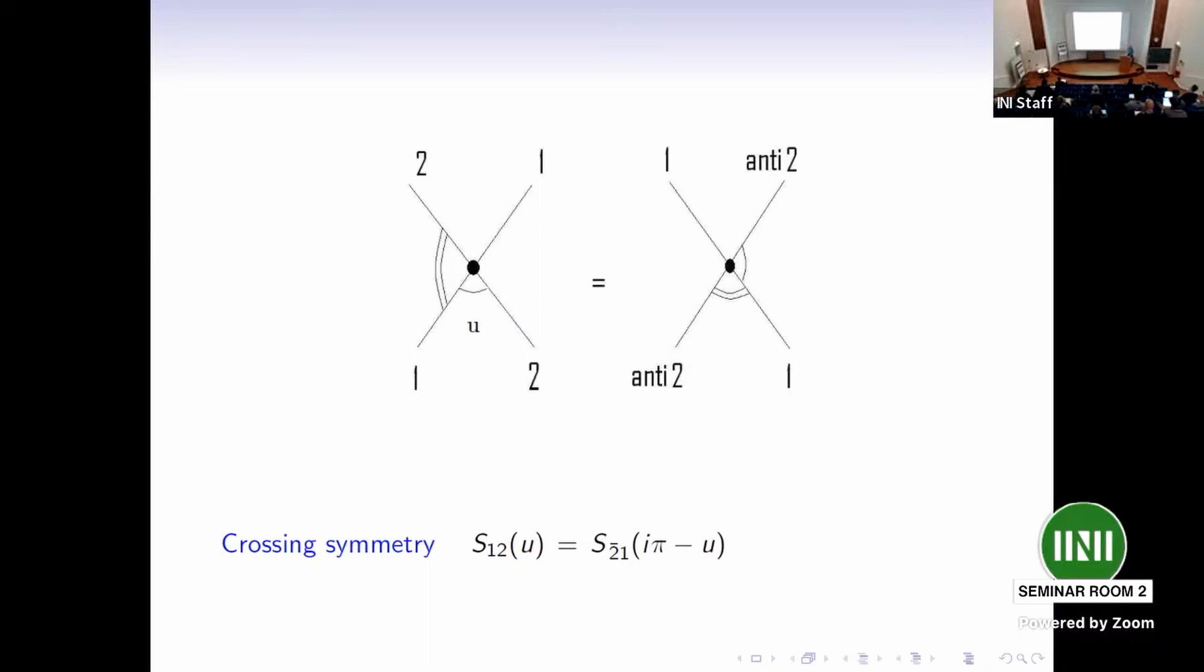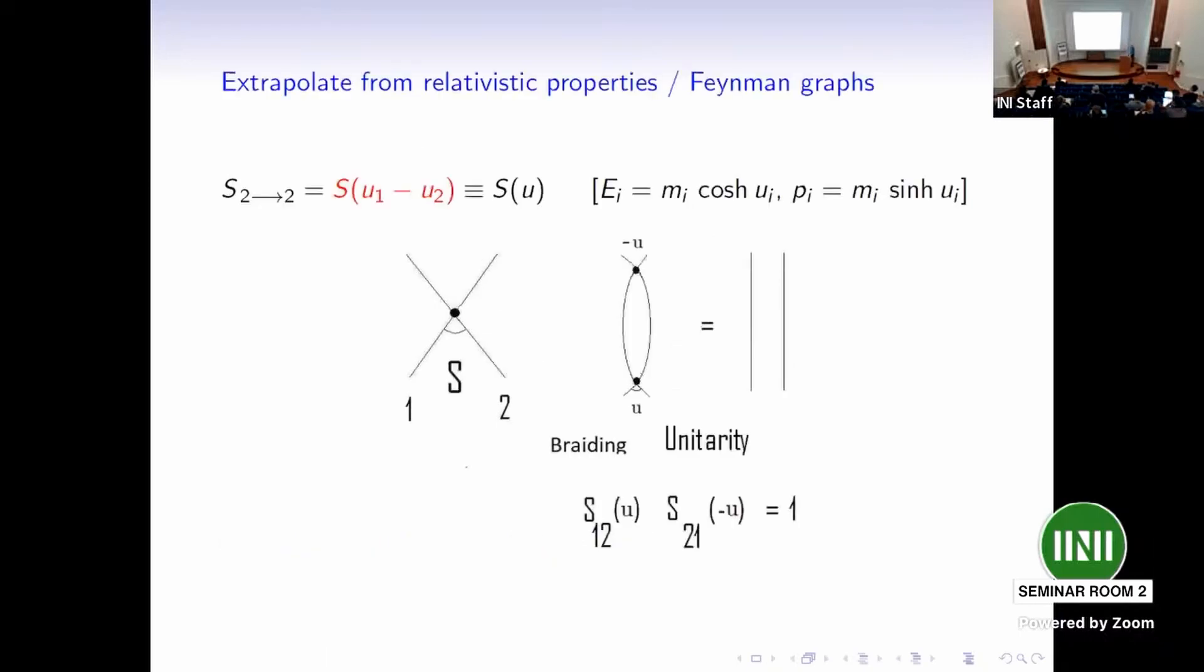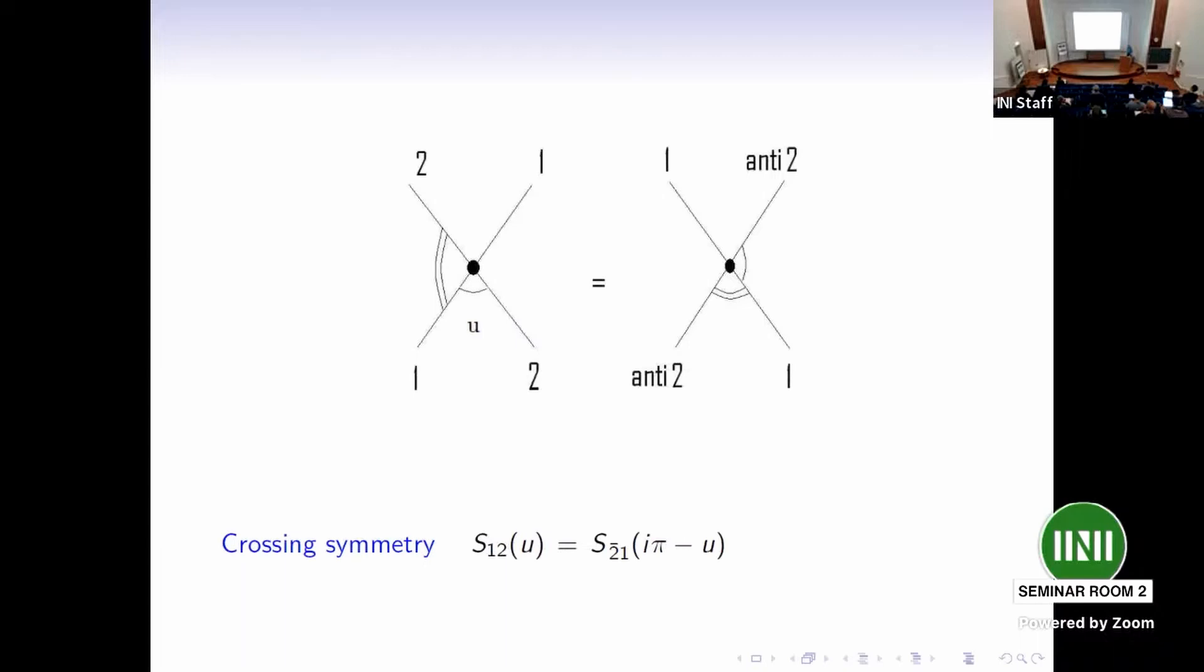It's actually a function, a matrix valued function of one variable, U, the difference. I then analytically continue to the complex plane. I use the power of analyticity in this U variable, which will be complex. The first thing I need to write is braiding unitarity, which is a quantum group property. It's not the unitarity of physical theory, which also needs to be satisfied, that says that the matrix, the S matrix has to be a unitary matrix for real momenta. But this is different. This is a sort of knot type relation. It means that if I do a scattering and then I undo it, I get nothing. It's a sort of more algebraic condition. It says S of one and two of U times S of two and one of minus U is identity matrix. So it's one condition, sort of quantum group type.